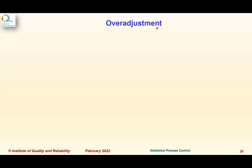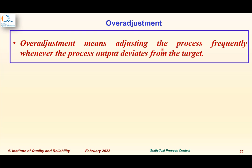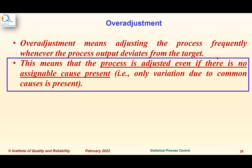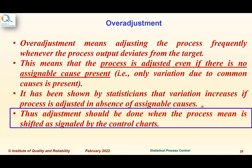One important concept is over-adjustment: adjusting the process frequently whenever the output deviates from the target, even when no assignable cause is present and only common cause variation exists. Statisticians have shown using tools like the Nelson Funnel that variation actually increases if the process is adjusted in the absence of assignable causes. Therefore, adjustment should only be done when the process mean has shifted as signaled by the control chart.